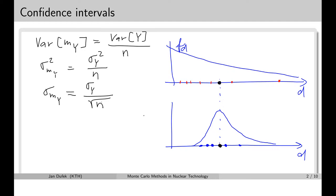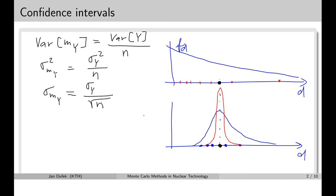That means if I want to reduce the standard deviation of the mean value 10 times, I'll have to generate 100 times more samples. By collecting more samples during a single Monte Carlo simulation, we will improve the standard deviation of this distribution of mean values. If we improve it considerably, then the results will be falling around the expectation value much closer and the variance of the samples will be smaller.